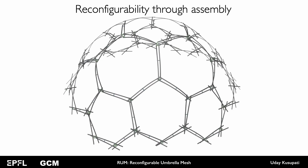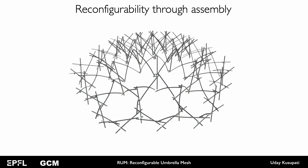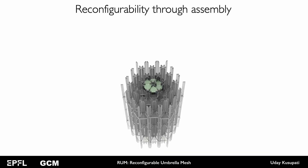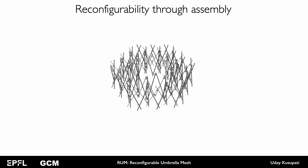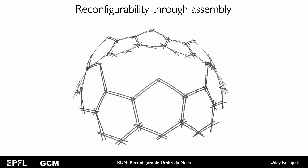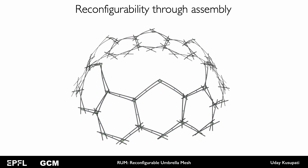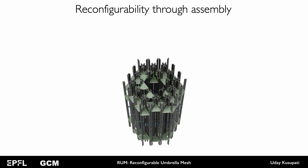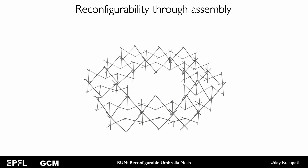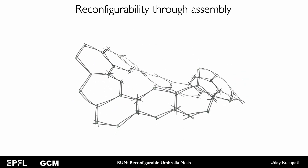RUMs also offer a different form of reconfigurability, that is through reassembly. We take a RUM in a dome configuration and remove a few cells in the middle. The structure redeploys into a surface with a different topology. This way, RUMs simplify controlling the topology of the approximated surface. In addition, we can always reconfigure the height distribution to control the continuous geometry. This gives us a structure that is completely different in surface geometry as well as the topology from the initial topology.